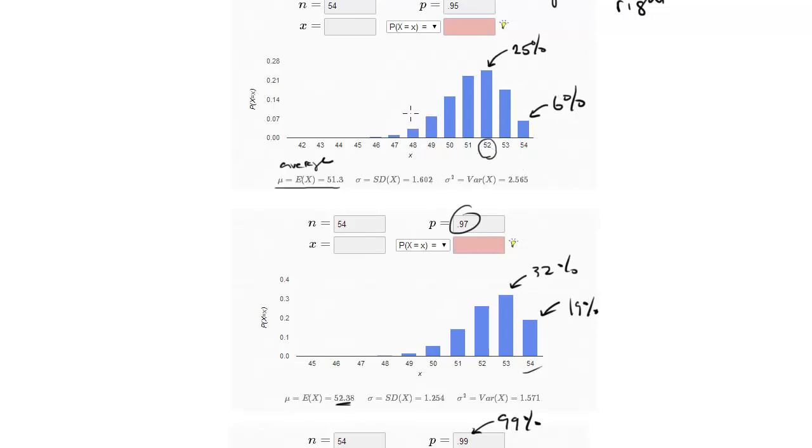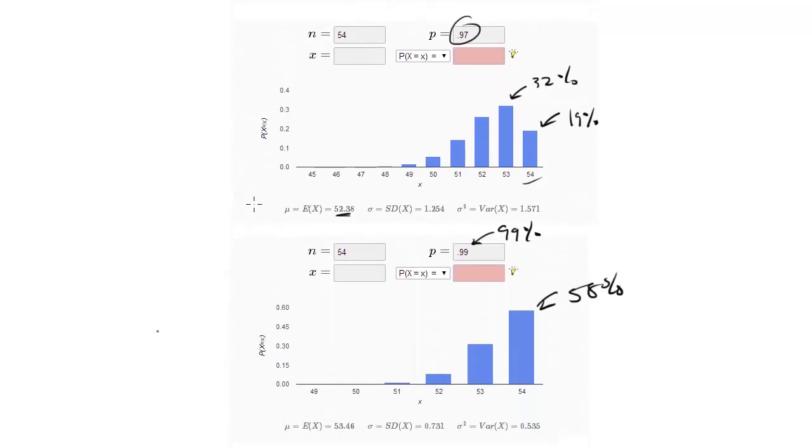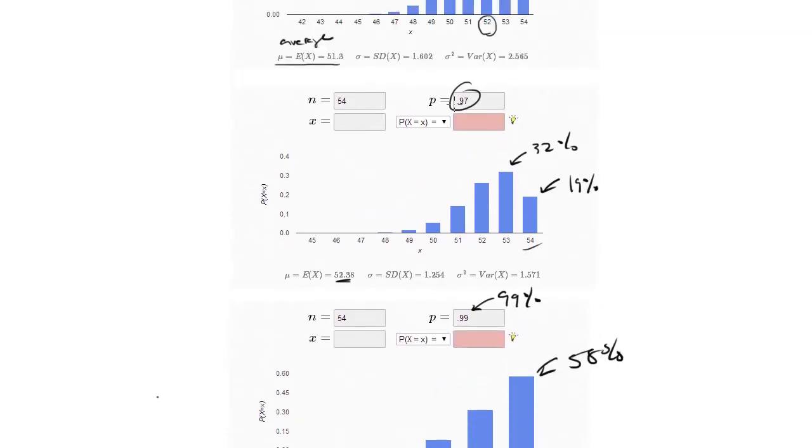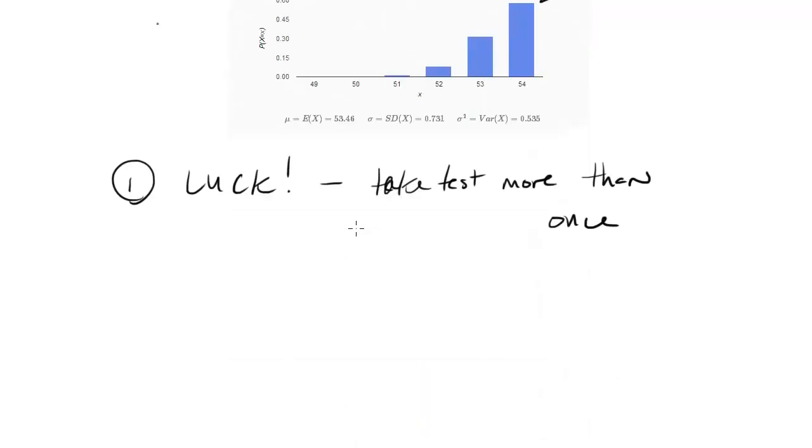You need to get as many chances to hit your top end of the distribution as possible. On any given test, maybe you just have a bad day, you end up in this lower end. So if you're a 97%er, you with a 2% chance could still get a 49, which isn't a bad score. It's just not what you would have probably expected because that's quite low on your distribution. So luck really matters. You want to take it more than once, of course.